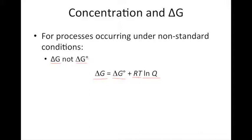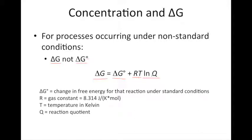So this formula takes into account the temperature and concentrations under non-standard conditions. You can see the gas constant that we use here, 8.314. We use the gas constant in terms of joules per Kelvin per mole. As we mentioned, the temperature's in Kelvin, and Q is our reaction quotient.